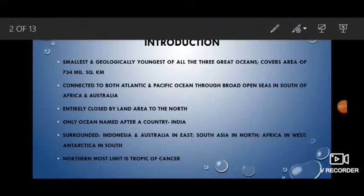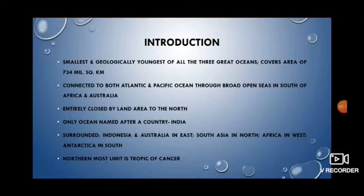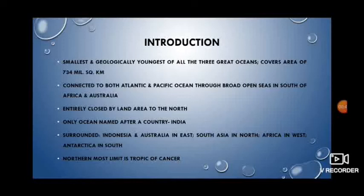The Indian Ocean is the smallest of all the three great oceans. It is the geologically youngest among all these three great oceans, covering an area of 734 million square kilometers. It is connected to both the Atlantic and Pacific Ocean through the broad open seas in the south of Africa and Australia. Unlike the Pacific and the Atlantic Ocean, the Indian Ocean is entirely closed by land area to the north.